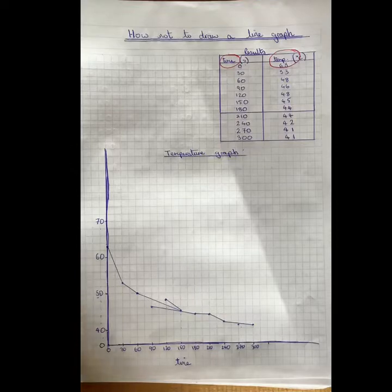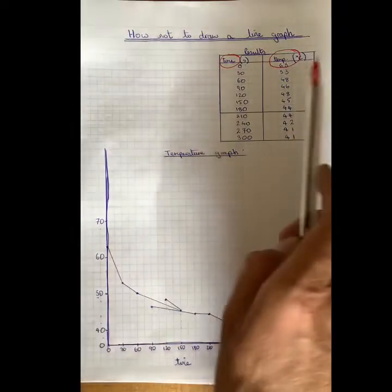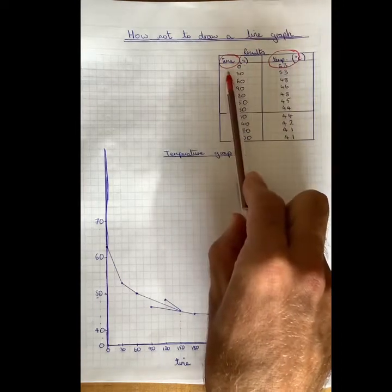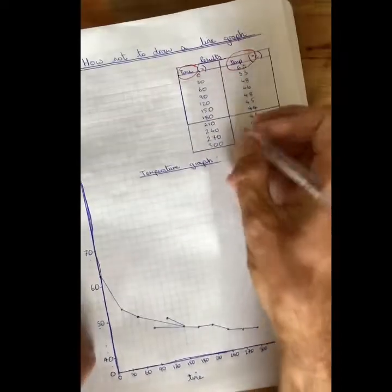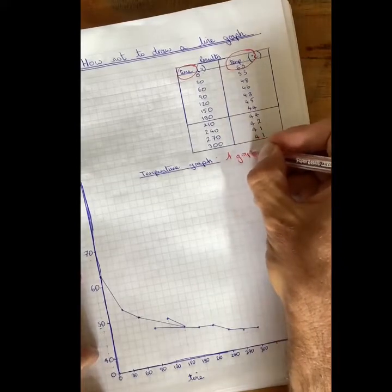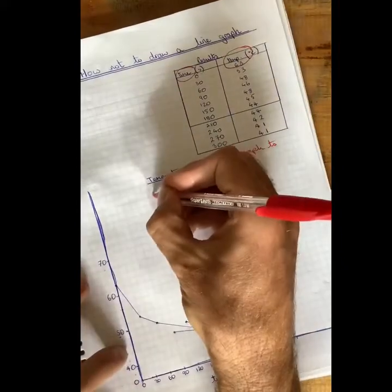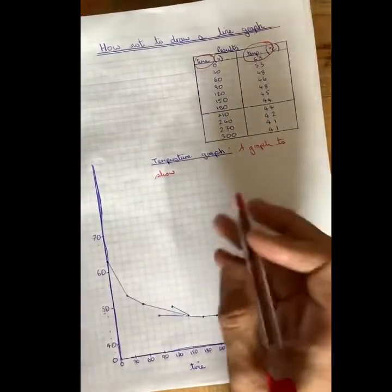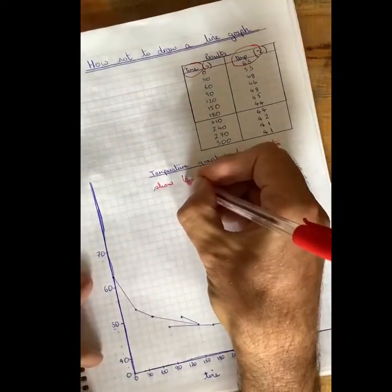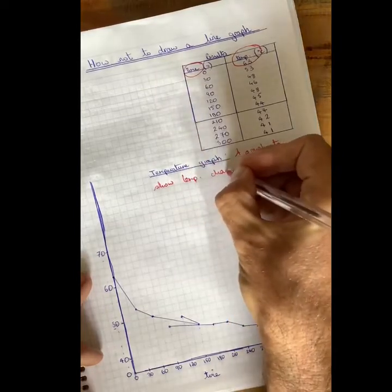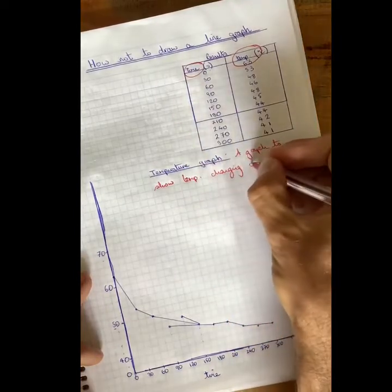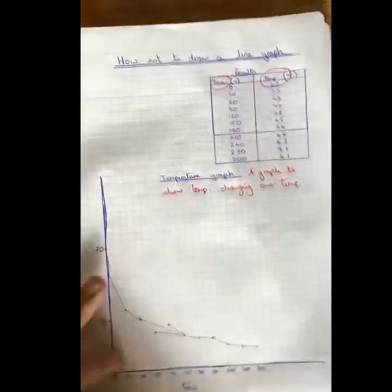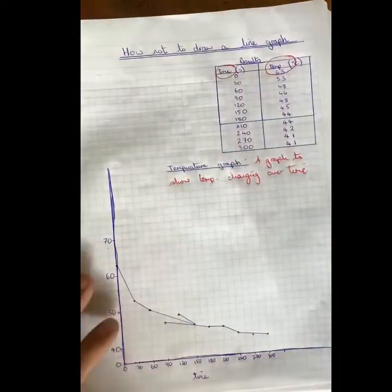Okay, so it would be something like the change in temperature over time. I always like to start my graphs with a graph to show and then that gives you the base. What does it show? Temperature changing over time. And you've got your two variables in there. So that's the first error that I see there.